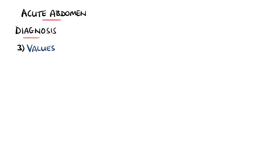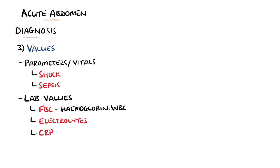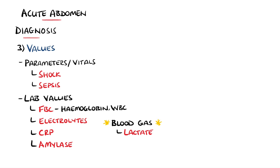It is important to remember that the vital signs are crucial, with indicators such as hypotension and tachycardia potentially pointing towards a patient who is critically unwell and possibly shocked or septic. Lab values are useful, such as the hemoglobin count, white blood cells, electrolytes, and inflammatory markers like CRP, as well as amylase levels. A blood gas is very useful as an immediate result, as it crucially also contains lactate, which can be a marker for tissue hypoxia or poor perfusion if raised, and will help to determine how urgent the case is.